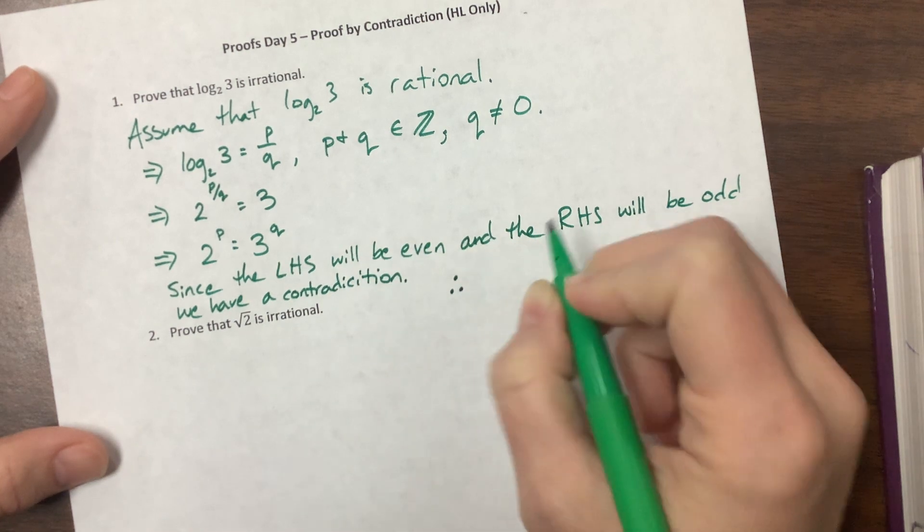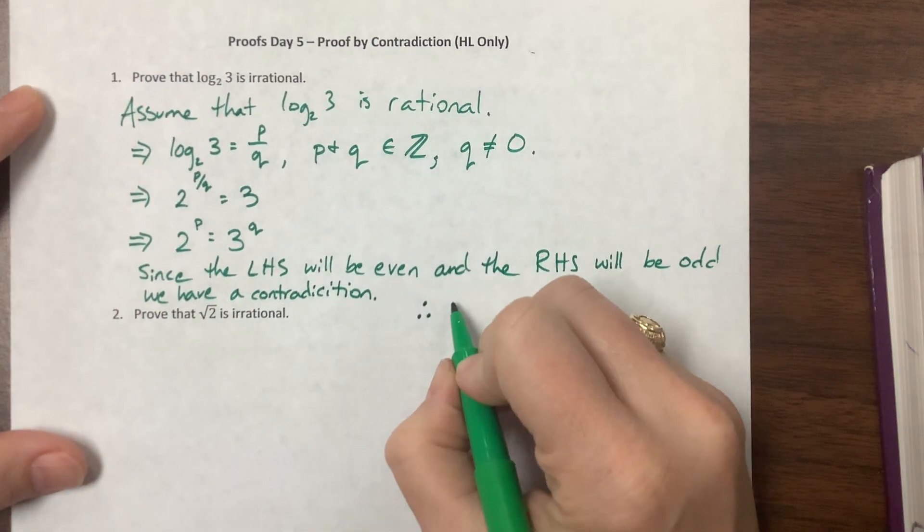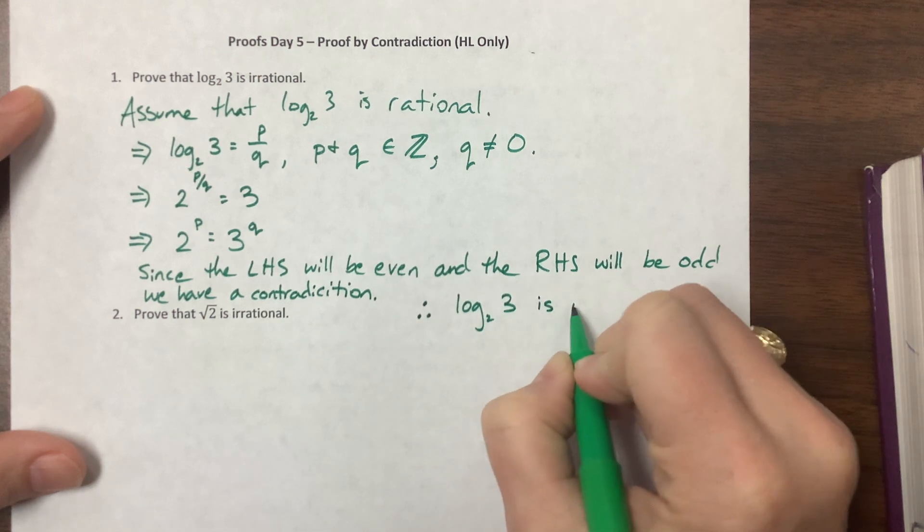Therefore, what we conclude is our assumption was wrong. Our assumption was false. Therefore, we conclude that log base 2 of 3 is irrational.